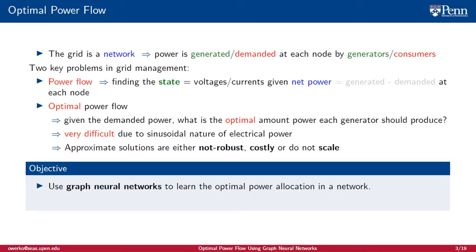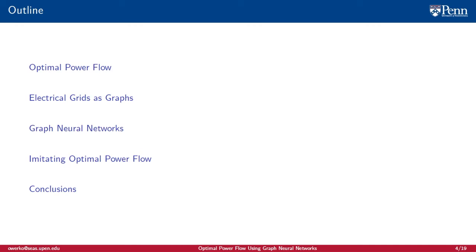So, how could we use graph neural networks to learn the optimal power allocation of a network? If successful, we could leverage local computations, distributed implementations, and scalability. If you're still listening, that's fantastic. In this presentation, I will define optimal power flow and its associated challenges, explain how electrical grids can be represented by graphs. I will let Fernando Gamma introduce graph neural networks. And finally, I will describe how we applied them to optimal power flow.